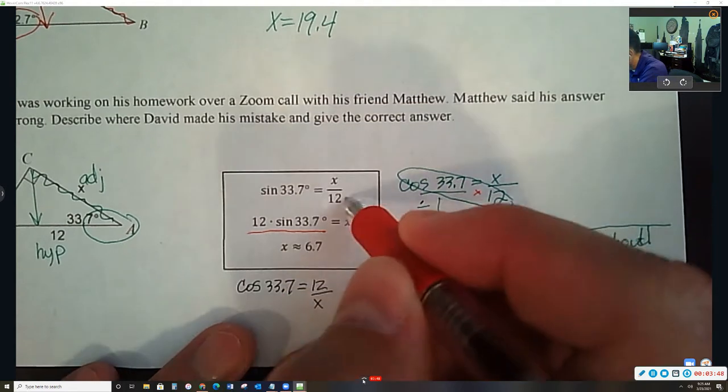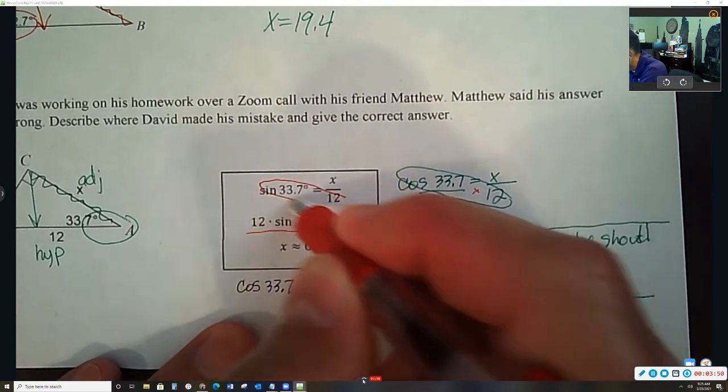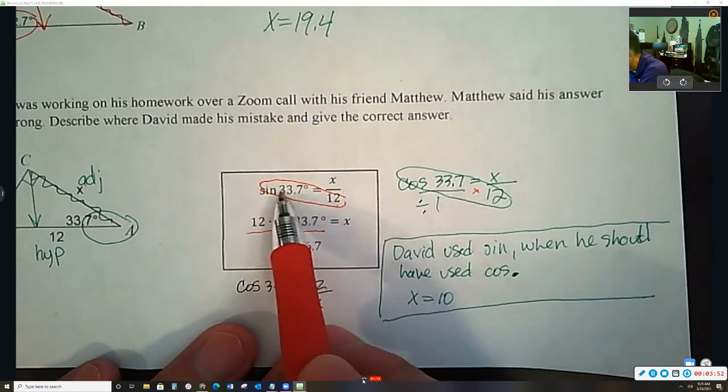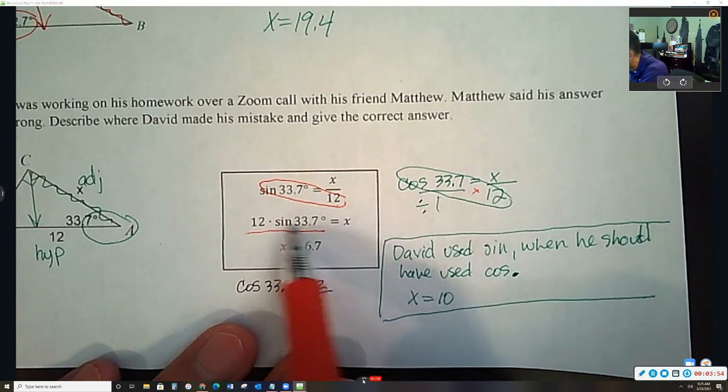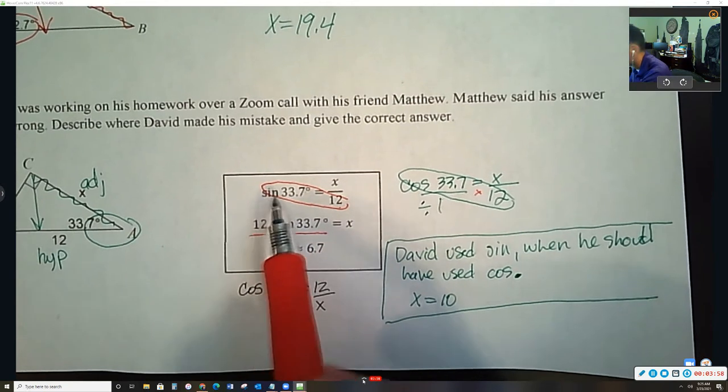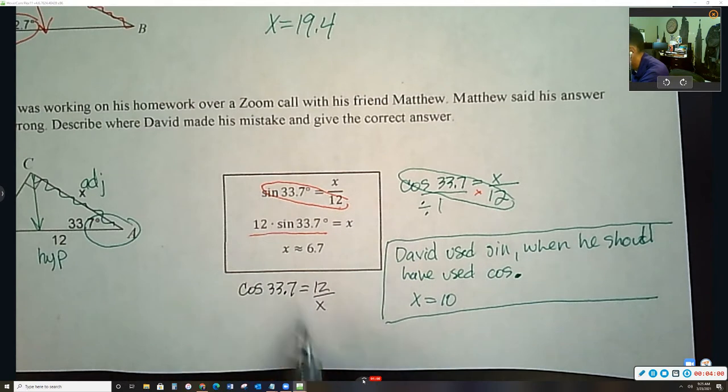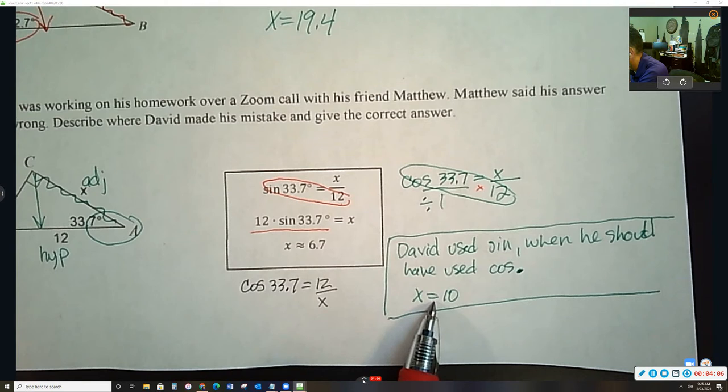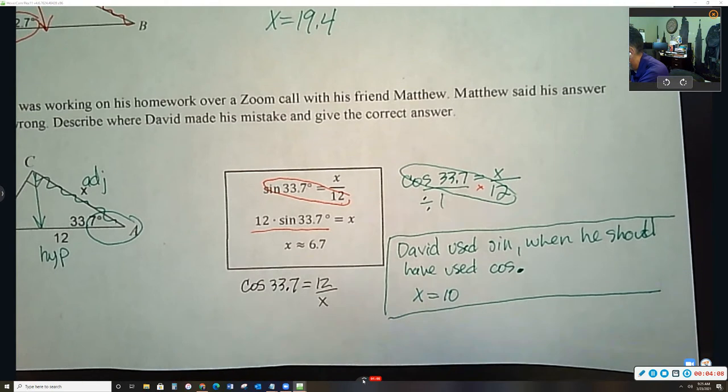Because technically they cross multiply this way. 12 times sine of 33.7. They cross multiply correct, but they started with the wrong trig ratio. So just look for the different things. Make sure you have the correct answer and say what was wrong with their answer.